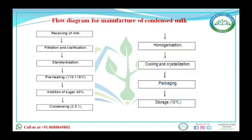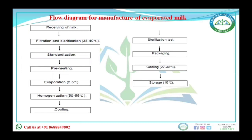The process of manufacture of condensed milk involves: receiving milk, filtration and clarification, pre-heating, addition of sugar, condensing, homogenization, cooling and crystallization, then packaging and storage at 10 degrees. For evaporated milk: receiving milk, filtration and clarification, standardization, pre-heating, evaporation, homogenization, cooling, sterilization, packaging, and storage.